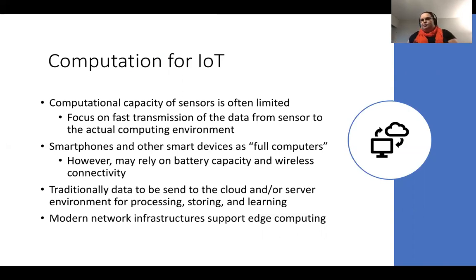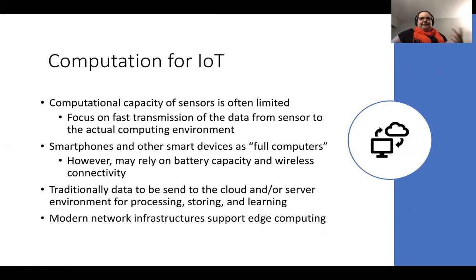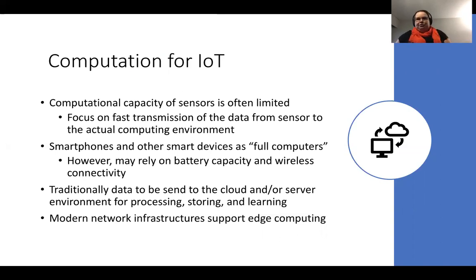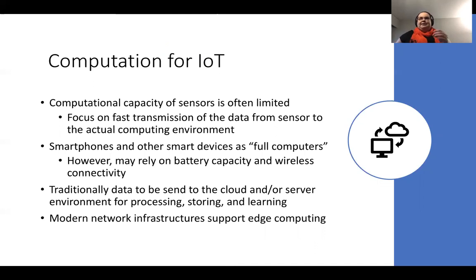The traditional way to perform this offloading — the terminology used when sending something to be computed somewhere else — is to use cloud services. Nowadays they are very easy to use: the developer basically needs a bank credit card to pay for the services and then they are free to go, without needing dedicated hardware or own servers. In the future, with modern upcoming 5G and 6G networks, we will have more edge capabilities to run things closer to the user and closer to the actual sensor than in the cloud.